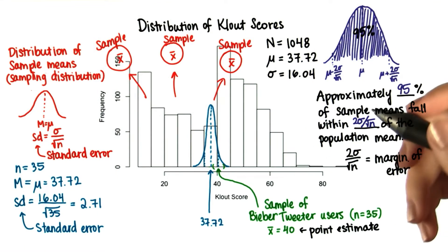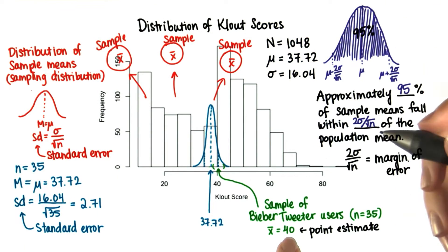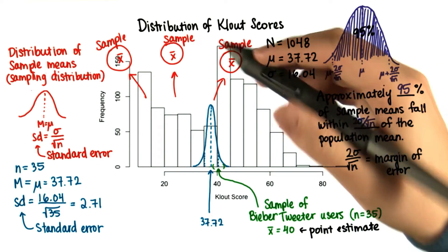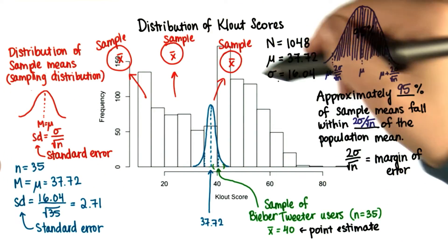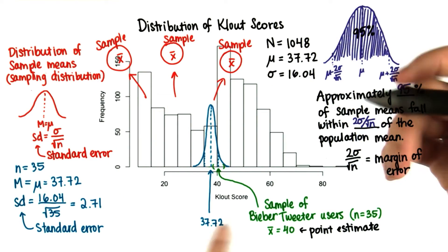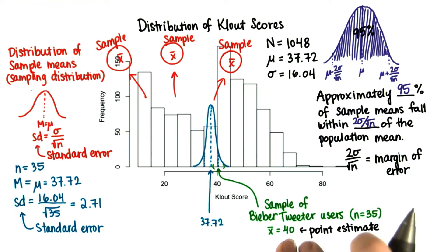So now what does that tell us about this value of 40? If everyone started using the Bieber tweeter, we're guessing that there'd be a new population distribution of clout scores. But we don't know what it would be. But we do know that one of the samples of size 35 has a mean of 40.